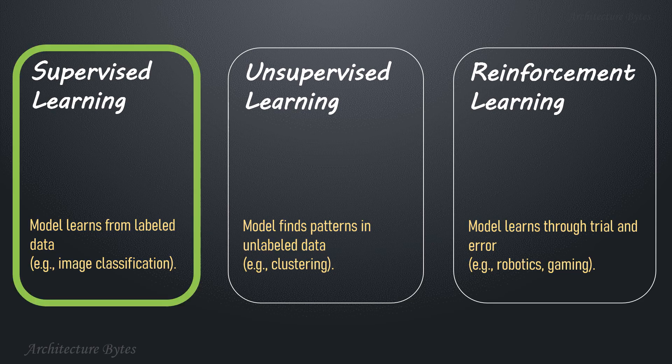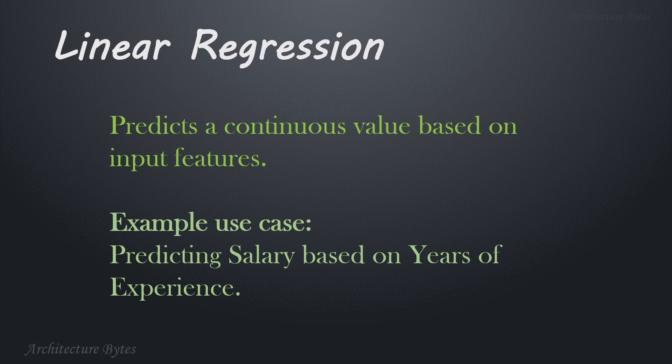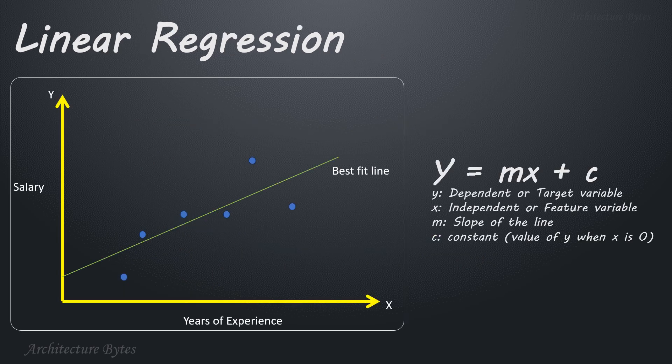Supervised learning algorithms. Linear regression predicts a continuous value based on input features. Example use case: predicting salary based on years of experience. In a graph form, it is about finding a best fit line to represent relationship between two variables.